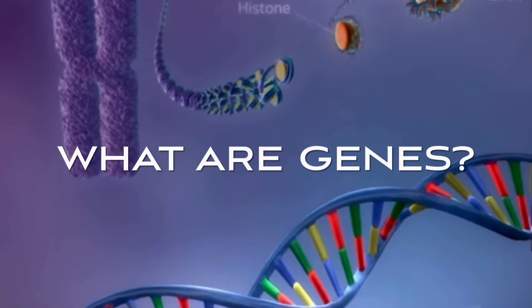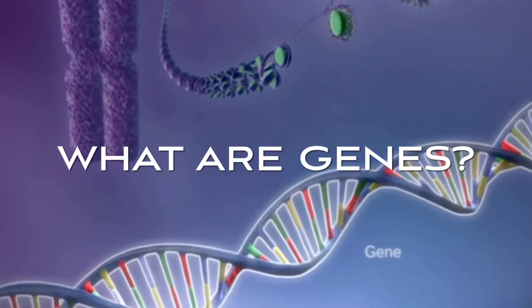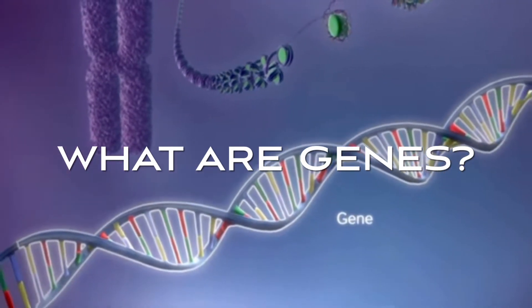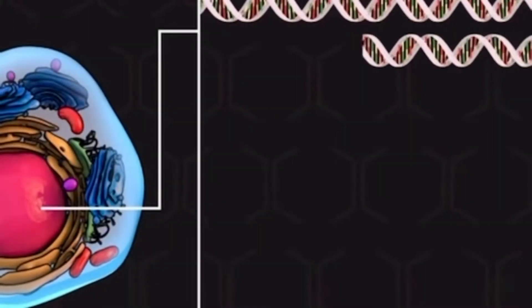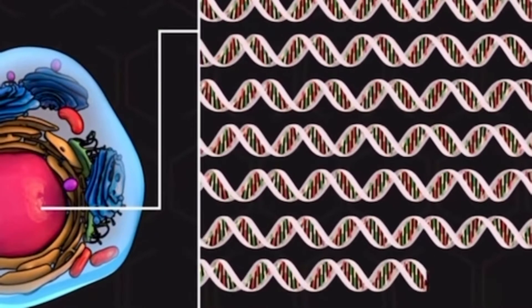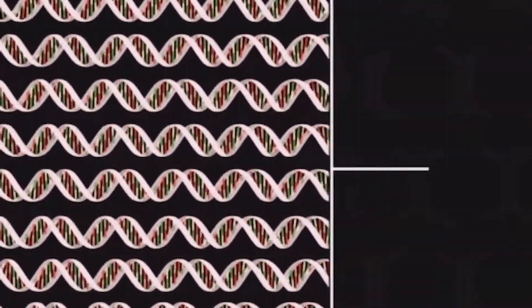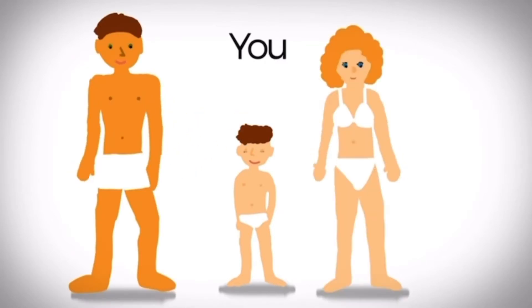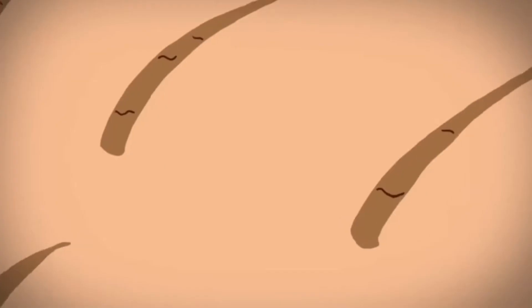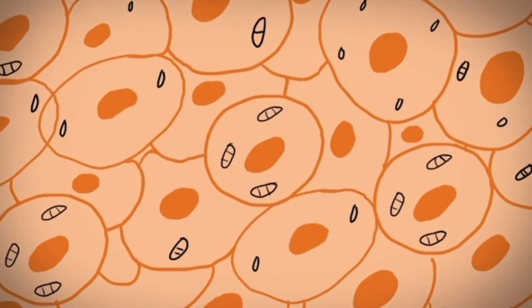Within the DNA are sections called genes. These genes contain the instructions for making proteins. Genes, DNA, and chromosomes are what make you who you are. They are the set of instructions that are given to you by your father and mother. These instructions are in your cells, and all living organisms are composed of cells.